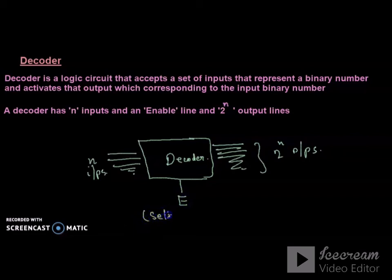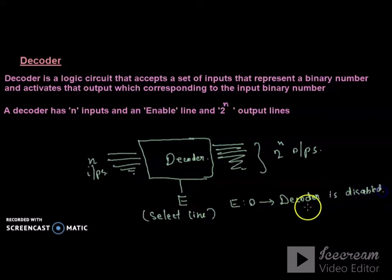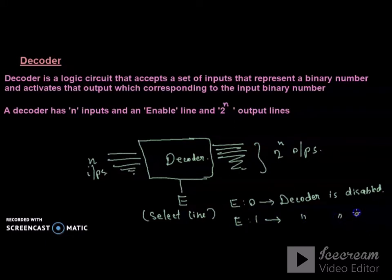Now let's look at the enable line. When the enable line value is 0, the decoder is disabled — that means it is in the off stage. If the enable value is 1, then the decoder is in the enabled stage, meaning it is in the on stage.